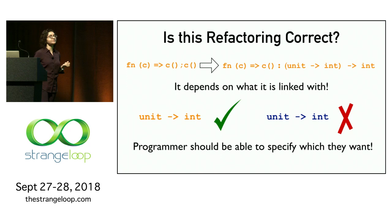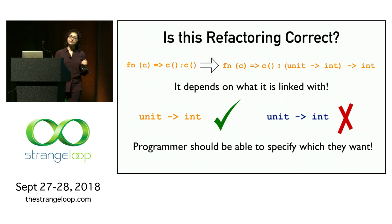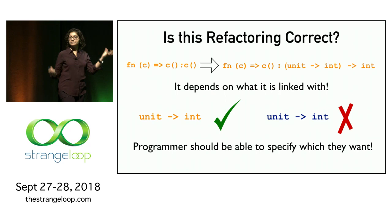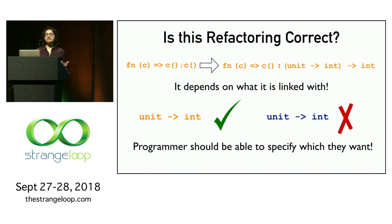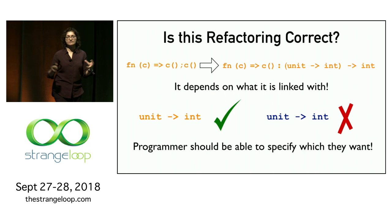The question of whether this particular refactoring is correct depends on what exactly it's linked with. If the only C accepted as input was a unit-to-int function from PureLang, the refactoring is perfectly okay. But if we're linking with a unit-to-int function from the stateful language — which looks the same but is stateful, might diverge, and might allocate a reference — the refactoring is no longer okay. What I'm proposing is that the programmer should be able to specify which one they want when building multi-language software.